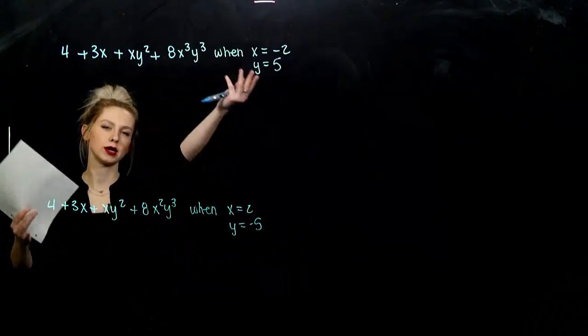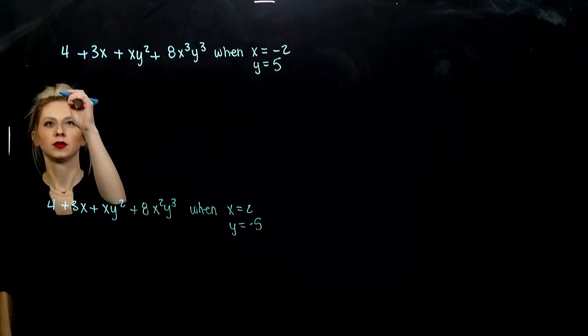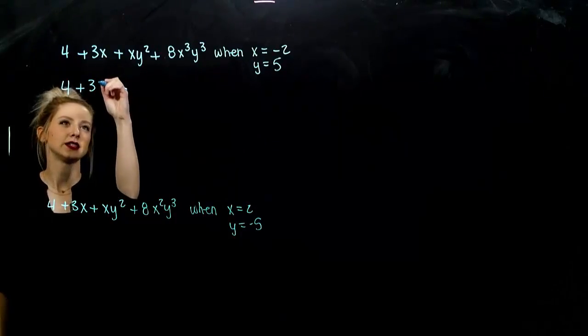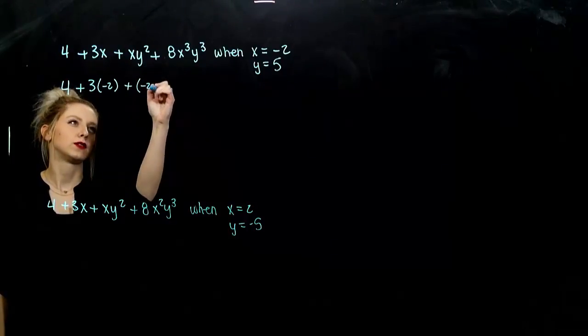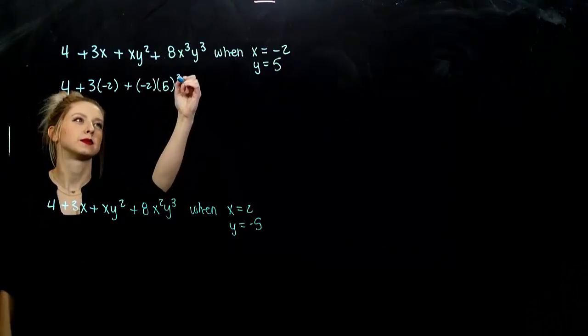So wherever we see x, we plug in negative 2. Wherever we see y, we plug in 5. So, 4 doesn't have anything to plug in. x, its value is negative 2. Again, x is negative 2, y is 5, and I'm squaring that.